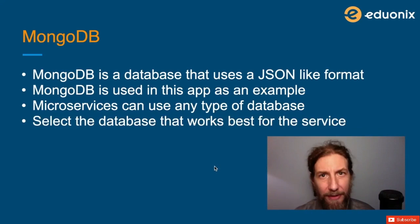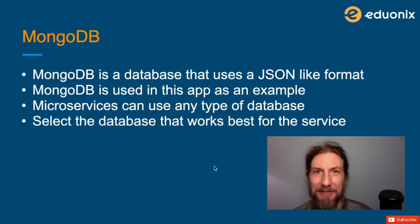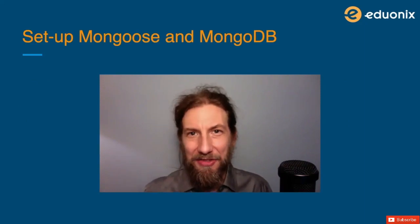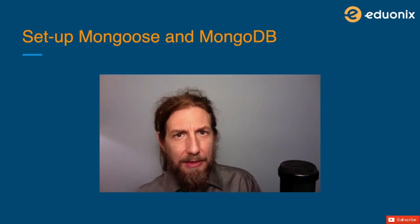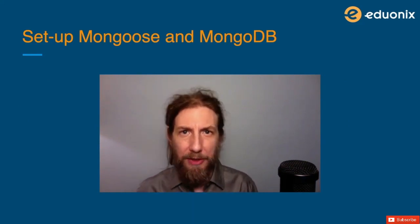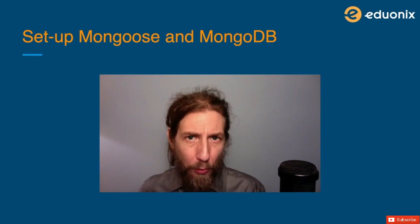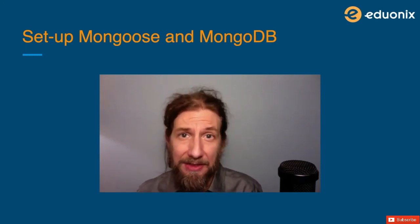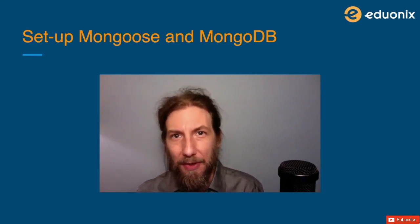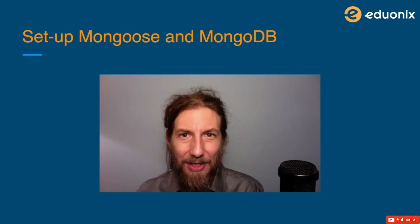In real life, you should choose the type of database that's going to work best with your microservice. In the next lesson, we're going to begin to make our app a little bit more complicated. We're going to work with Kubernetes and change from a Kubernetes pod to a Kubernetes deployment. We're going to deploy a MongoDB instance, and connect to it from Mongoose within our BirdSquawk microservice.